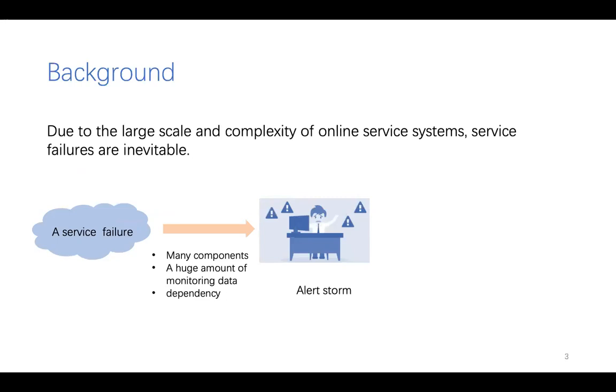In practice, failures are inevitable due to the large scale and complexity of online service. However, the occurrence of a failure tends to be along with numerous alerts. This is because a service system contains many components, each of which has a huge amount of monitoring data, and different components tend to be affected by each other. We call this phenomenon alert storm.